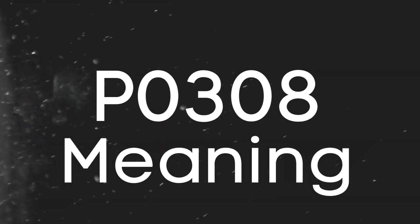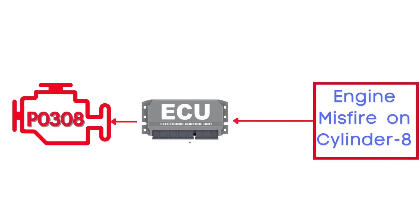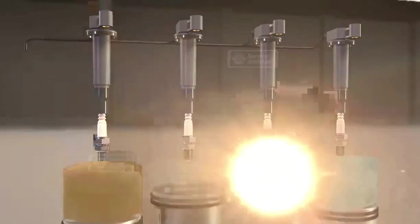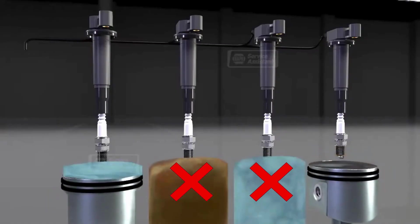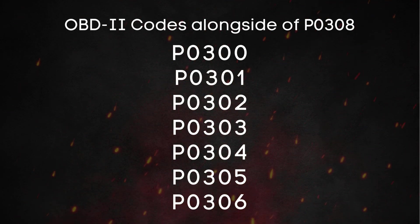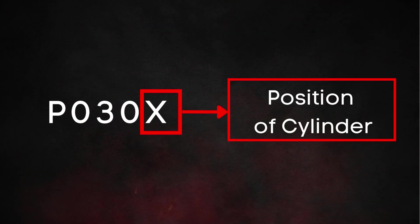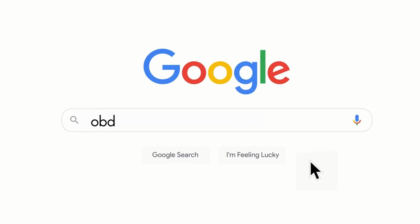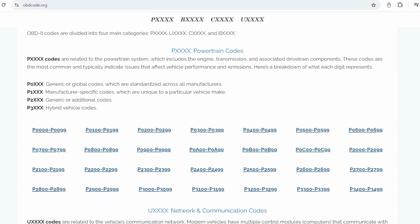Let's break down what the P0308 code actually is. This code gets triggered when the Engine Control Module, or ECM, detects an engine misfire on Cylinder 8. A misfire means that the combustion process inside one or more cylinders isn't happening properly. You may also find another OBD-2 code like P0301 to P0308 alongside P0300. The last number in these accompanying codes refers to the affected cylinder. Visit our website obdcode.org for a detailed explanation.